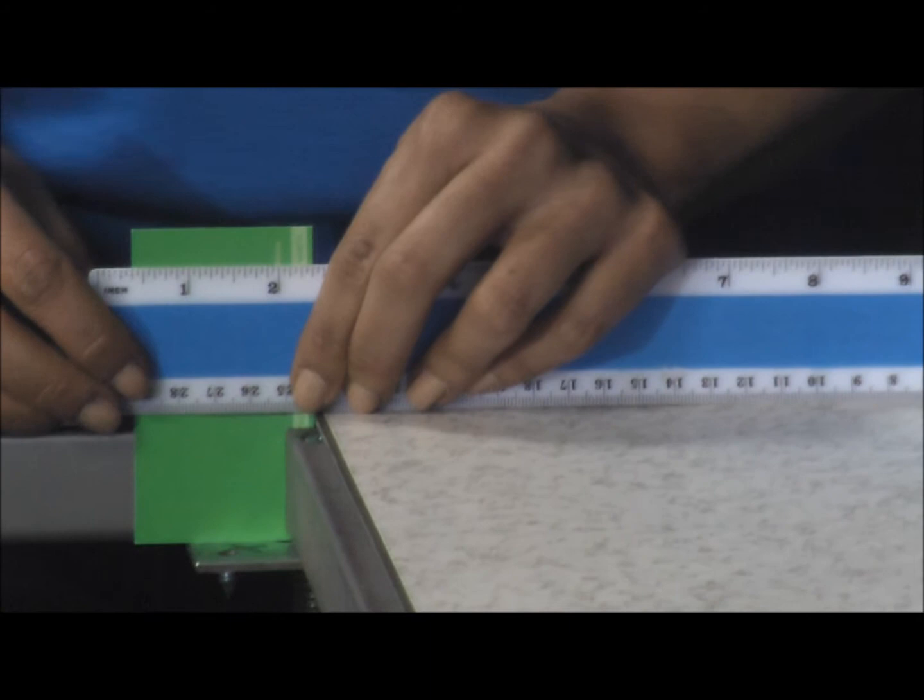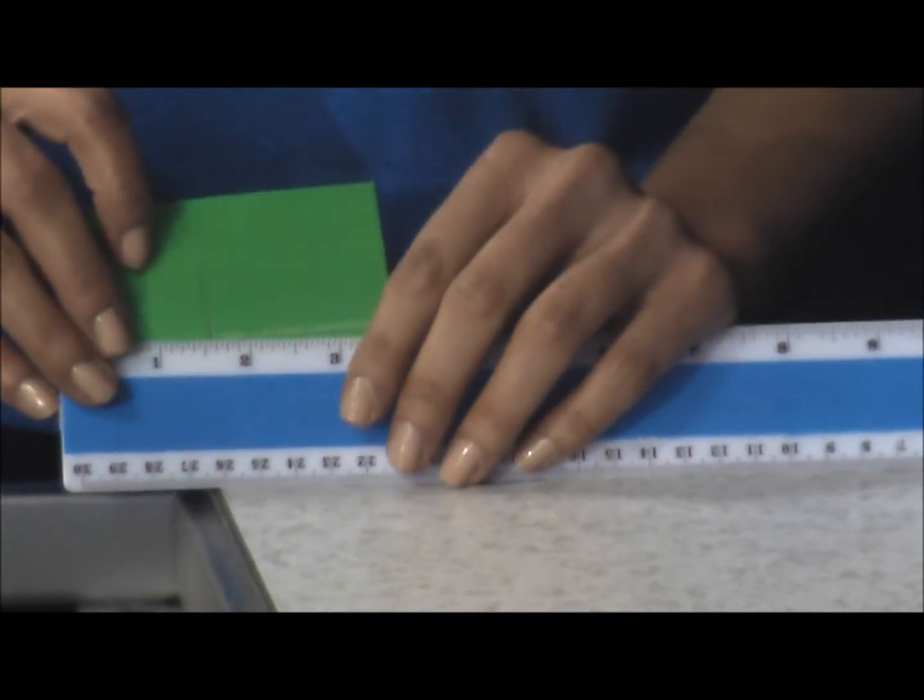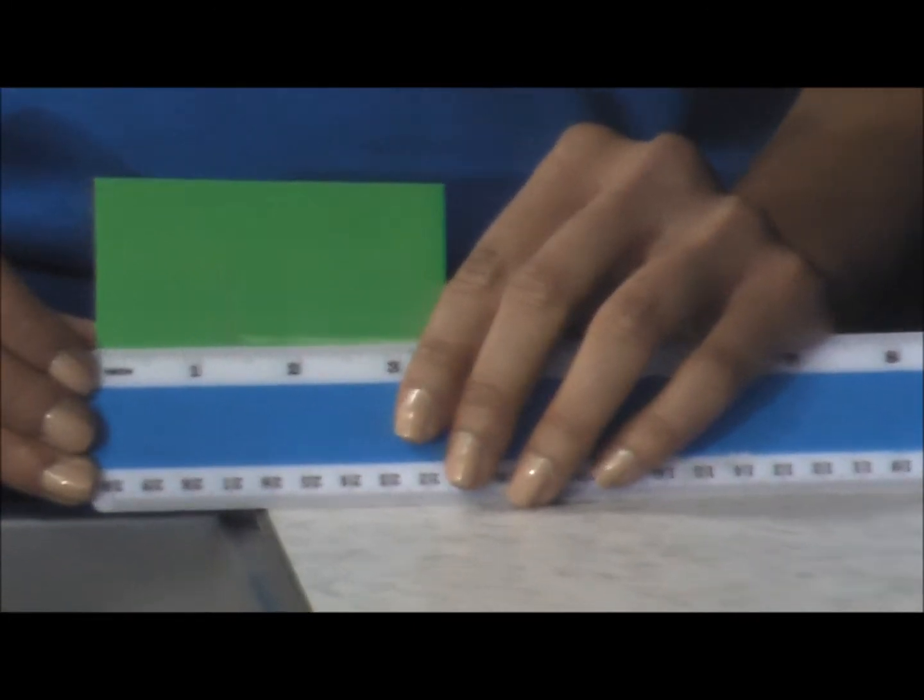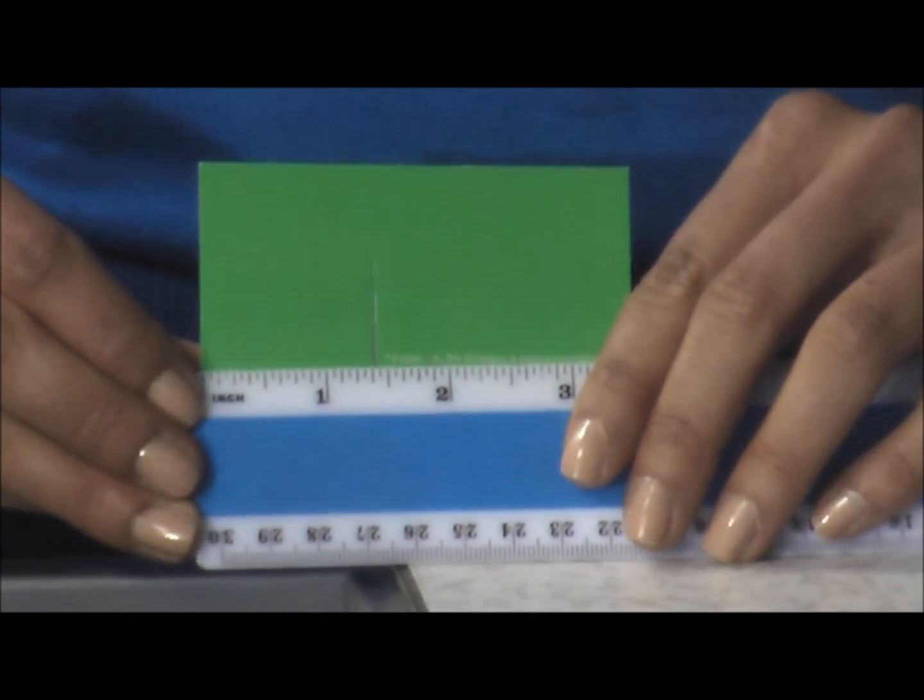Ok, now let's use the ruler to record the measurement of our line marking made on the business card. It measures one and seven sixteenths inches.